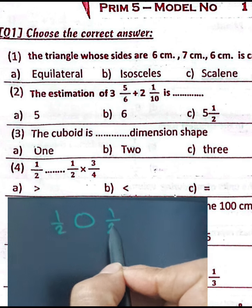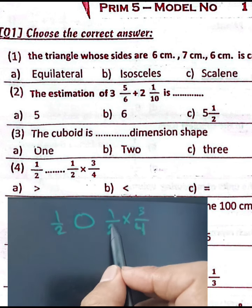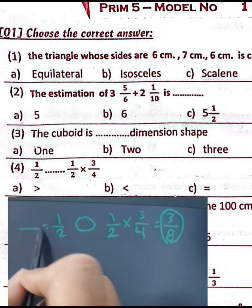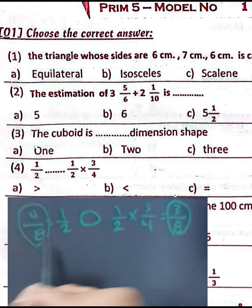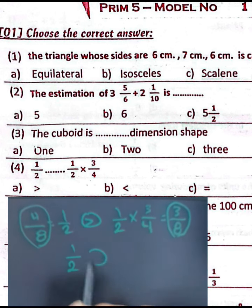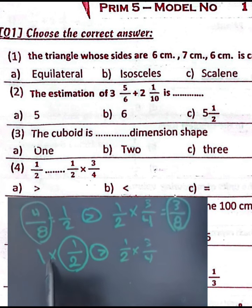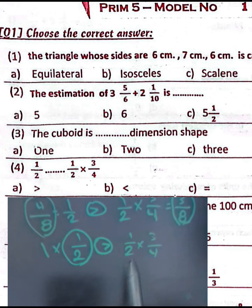Question number four: compare half and half multiplied by three-fourths. Half is greater than half times three-fourths. Because one-half times three-fourths equals three-eighths. Converting one-half: multiply numerator and denominator by 4 to get four-eighths. Four-eighths is greater than three-eighths. Alternatively, since three-fourths is less than one, multiplying half by three-fourths gives a result less than half.